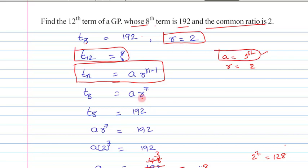From this we can write that a times r to the power of 7 equals 192. Substituting r equals 2, we can write it as a times 2 to the power of 7 equals 192.